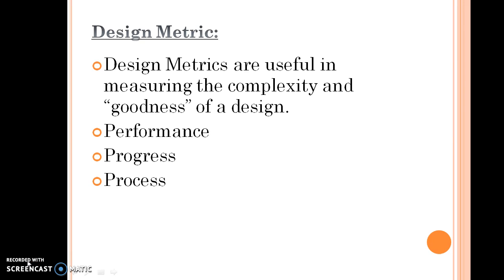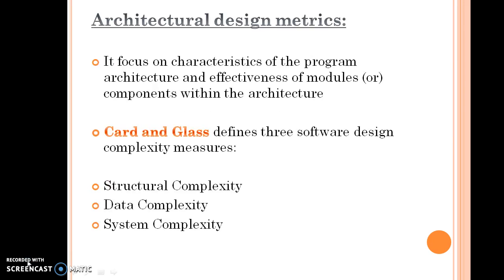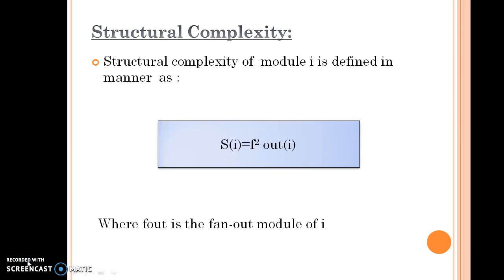Architectural design metrics focus on characteristics of the program architecture as well as the components within the architecture. Card and Glass define three software design complexity measures: structural complexity, data complexity, and system complexity.